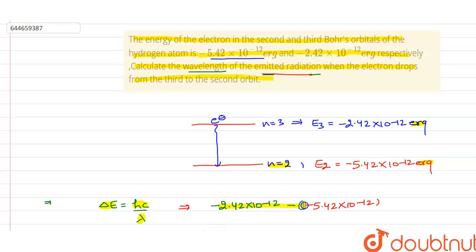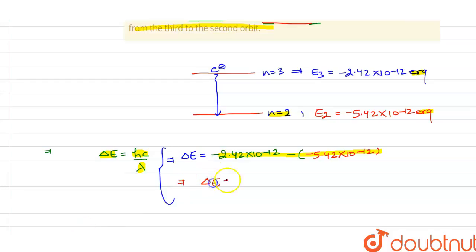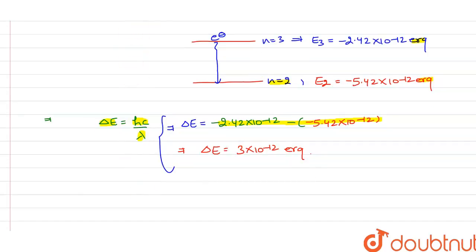First, we find the value of ΔE. ΔE = E3 − E2. Solving this gives us ΔE = 3×10⁻¹² erg.